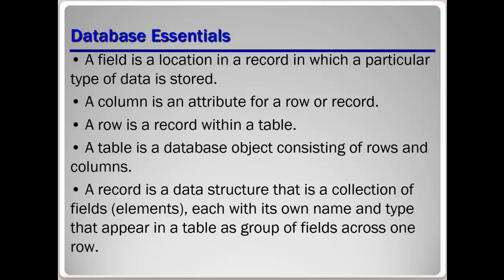Hopefully that triggers a little bit of your previous knowledge and helps you understand the database essentials. A table is a database object consisting of rows and columns — when you put those together, that is a table. A record is a data structure that is a collection of fields, each with its own name and type, that appear in a table as a group of fields across one row.